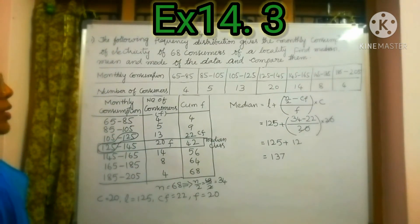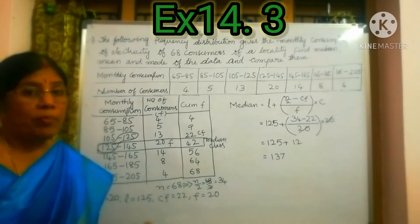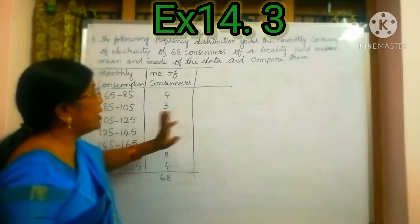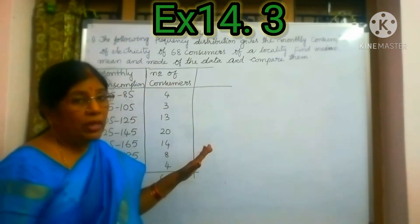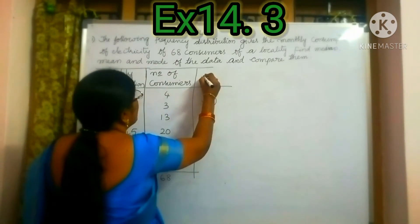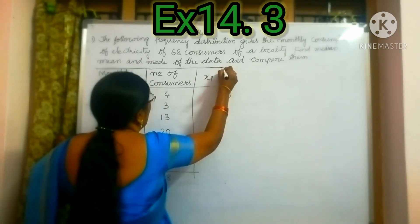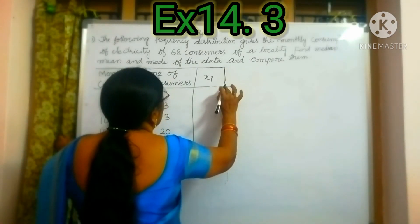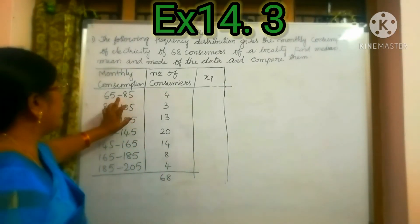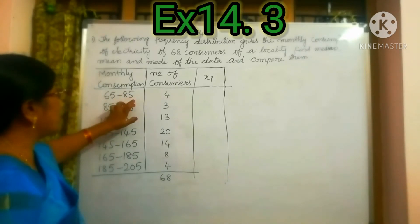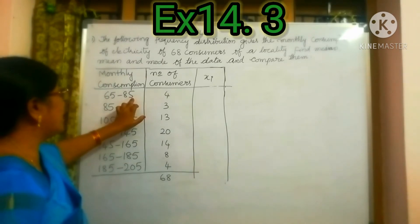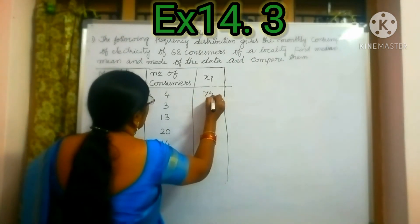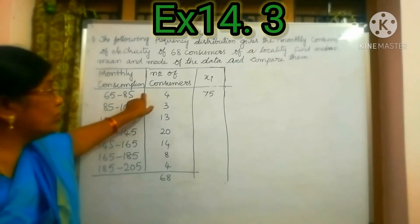Now let us find mean and mode and compare them. We found the median of this data. Now let us find the mean. To find the mean, we have to find the mid value of the class intervals. The mid value is denoted by Xi. To get Xi, we take the average of the class interval boundaries: 65 plus 85 is 150, divided by 2, that is 75.